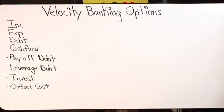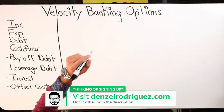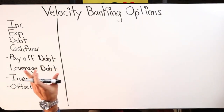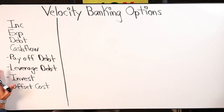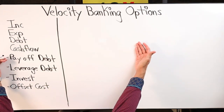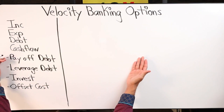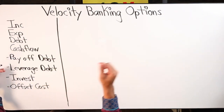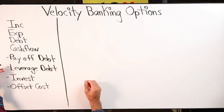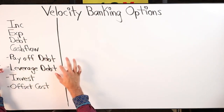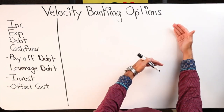Let's dive in and split this into different categories. We're going to go over the different velocity banking options. Velocity banking can be used to pay off debt — specifically bad debt or any debt. It can also be used to leverage debt, though leverage can be a scary word. Leveraging involves risk; you can lose money or make money. Paying off debt, by contrast, provides a guarantee — if you pay it off, you never have to worry about it again.